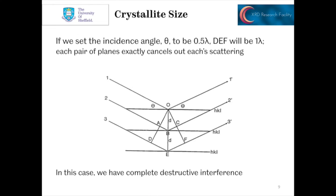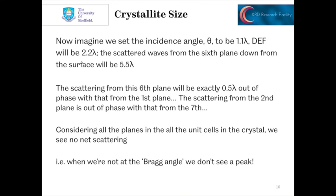If we, however, set theta to be half a wavelength, then the distance DEF will be 1 wavelength. And what we'll get now is complete destructive interference. So the planes are cancelling out each other's scattering. Now imagine we set the incidence angle theta to be 1.1 lambda, so it's about 110% of the wavelength. The distance DEF will now be 2.2 times lambda. And if we look at the sixth plane down, the scattered waves will be at 5.5 lambda.